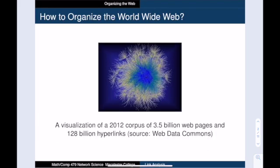Our motivating question is: how do we organize the World Wide Web? The web is a huge corpus of information — pages linking to pages via hyperlinks. So how do we make this corpus navigable? In other words, how do we find the information that we need, and how can we determine whether that information is reputable?